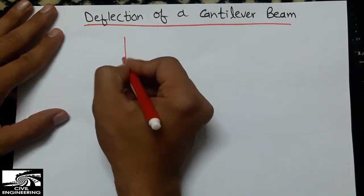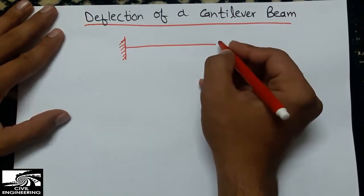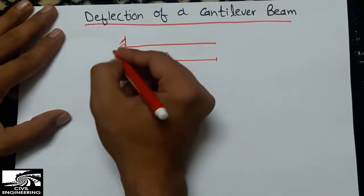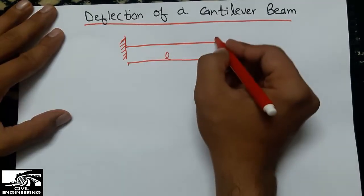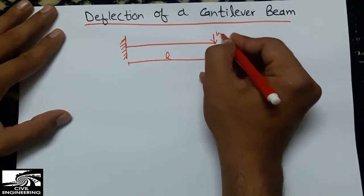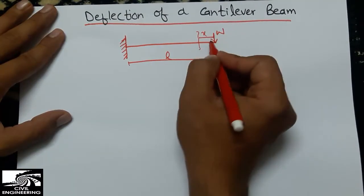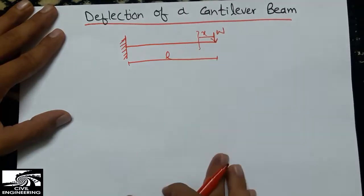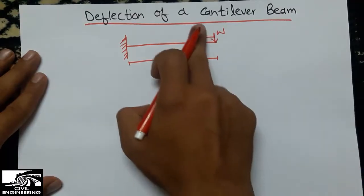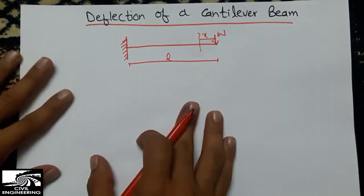We are assuming here a cantilever beam with a fixed end. The length of the beam is represented by L. This is a fixed support and the load W is acting on the free end of the beam. We suppose that x is the distance measured from the right support, and we need to find the moment at this point to find the deflection.